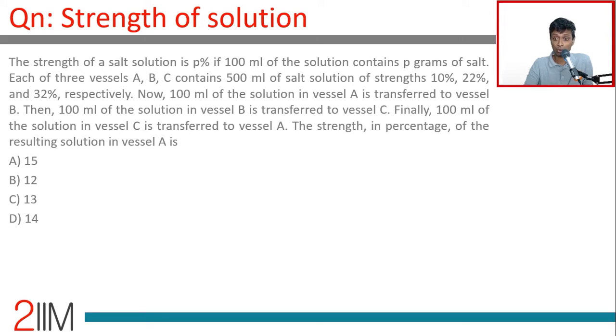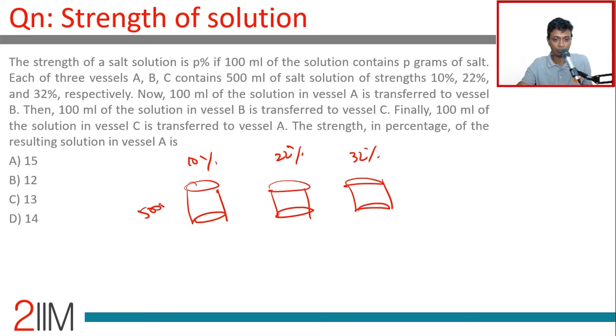Vessels A, B, C have solutions of strength 10%, 22%, and 32% respectively. So if 100 ml of solution contains p grams of salt, then 500 ml will have: A has 50 grams of salt, B has 22 times 5 equals 110 grams of salt, and C has 160 grams of salt.